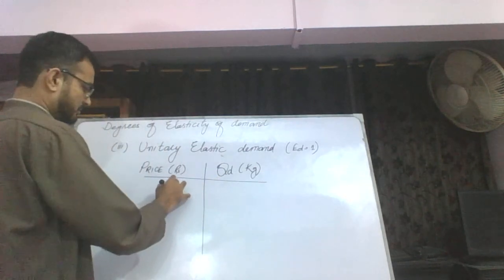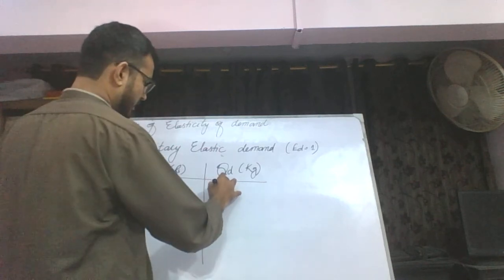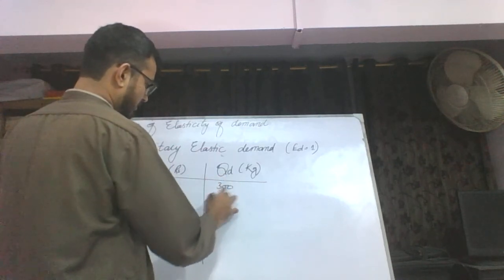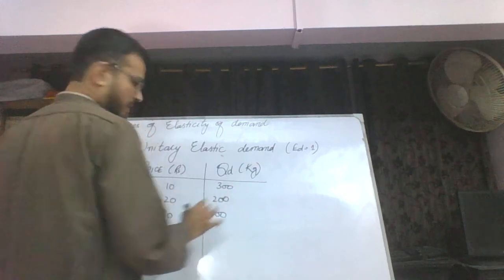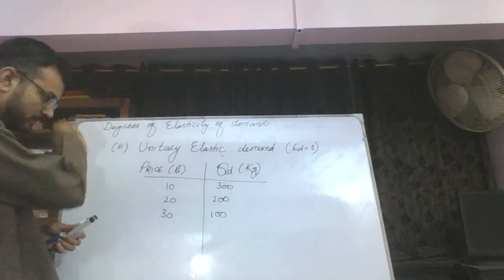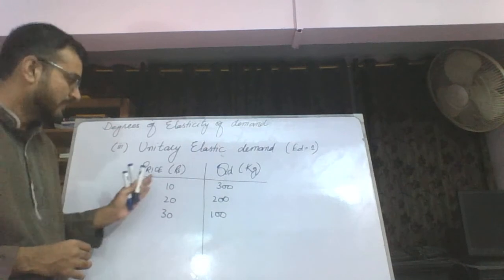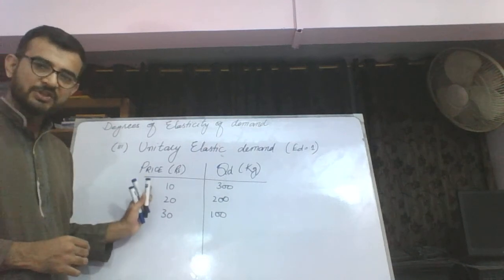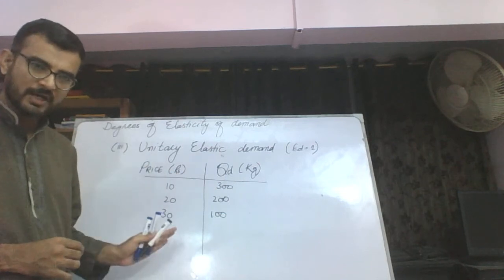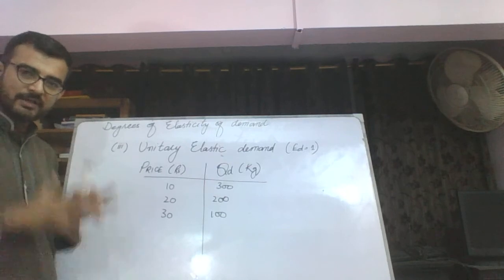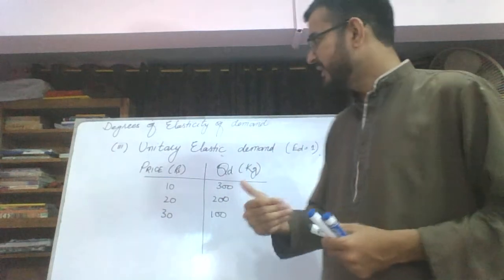For the schedule of Unitary Elastic Demand: when price is 10, quantity demanded is 300; when price is 20, quantity demanded is 200; when price is 30, quantity demanded is 100. The price changes in the same proportion as the quantity demanded changes. This is called Unitary Elastic Demand.